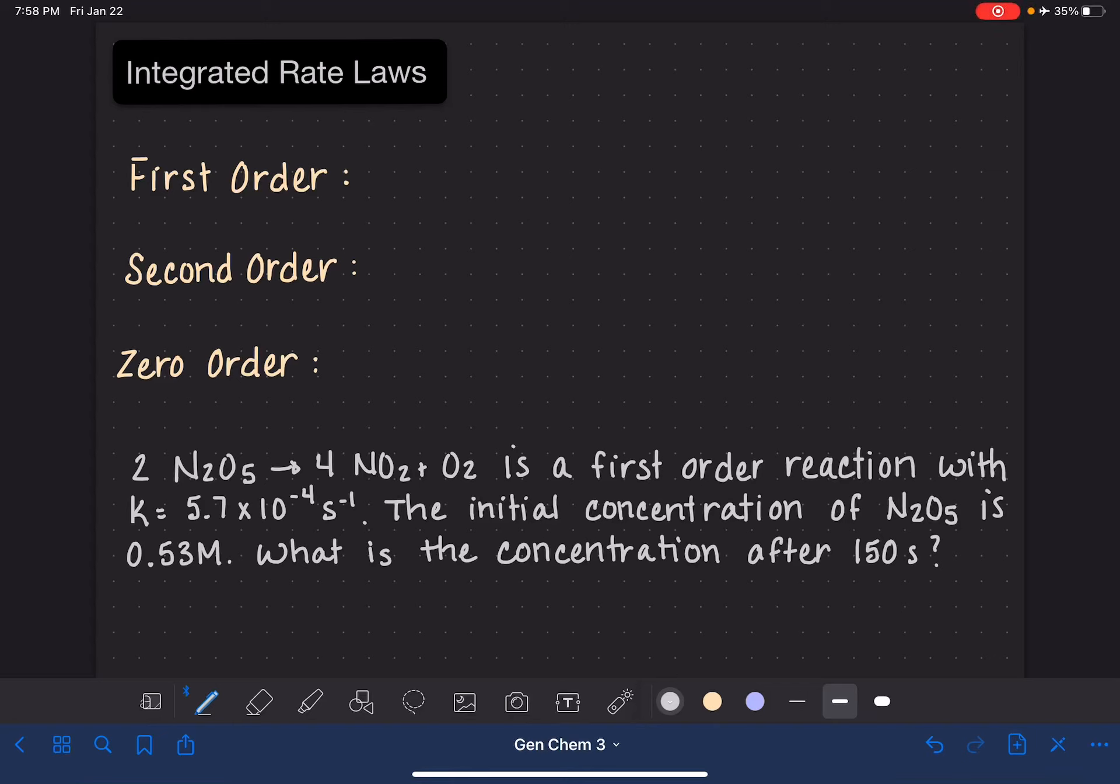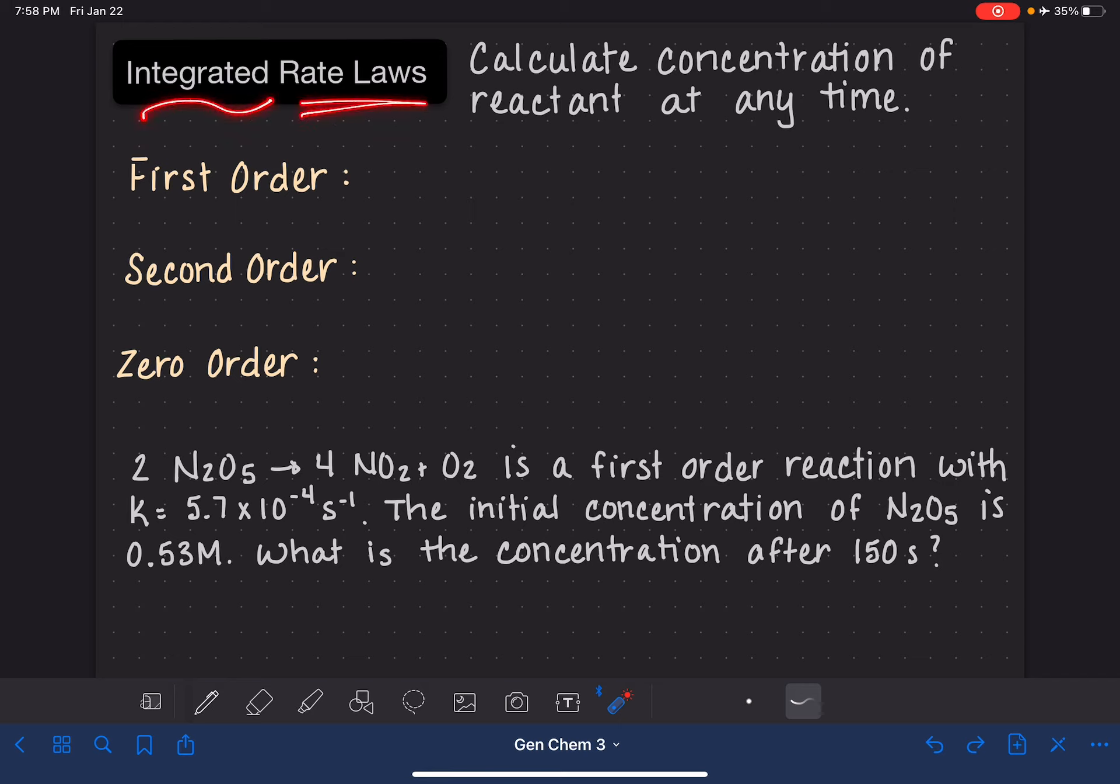The integrated rate laws are equations that we can use to calculate the concentration of a reactant at any time in a chemical reaction. They come from taking the integrals of our standard rate laws.